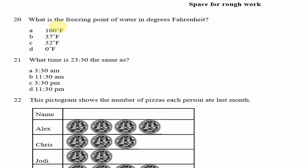Question 20: What is the freezing point of water in degrees Fahrenheit? This is a general knowledge question. The answer is option C — 32 degrees Fahrenheit. We know water freezes at 0 degrees Celsius, but when converted to Fahrenheit that becomes 32 degrees Fahrenheit.